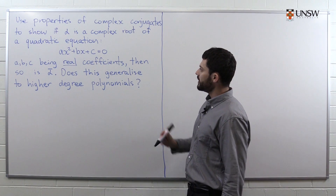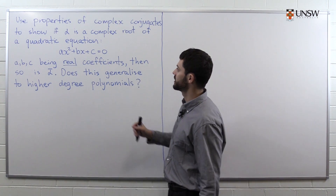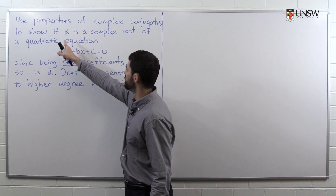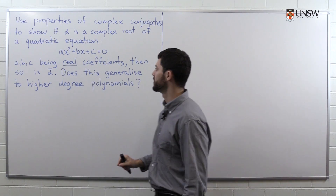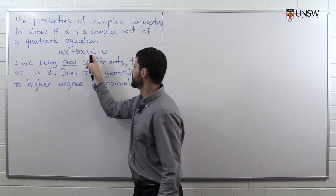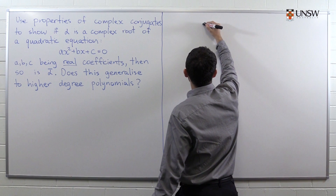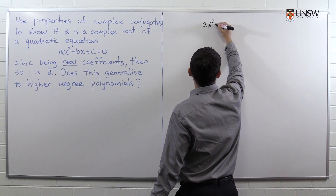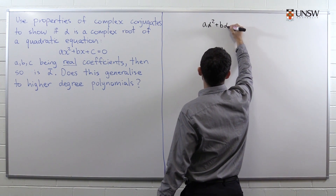The way we solve this problem is actually going back to the definition of what it means to be a root of an equation. For alpha to be a root of this equation, it means that if we substitute alpha in, it satisfies the equation.